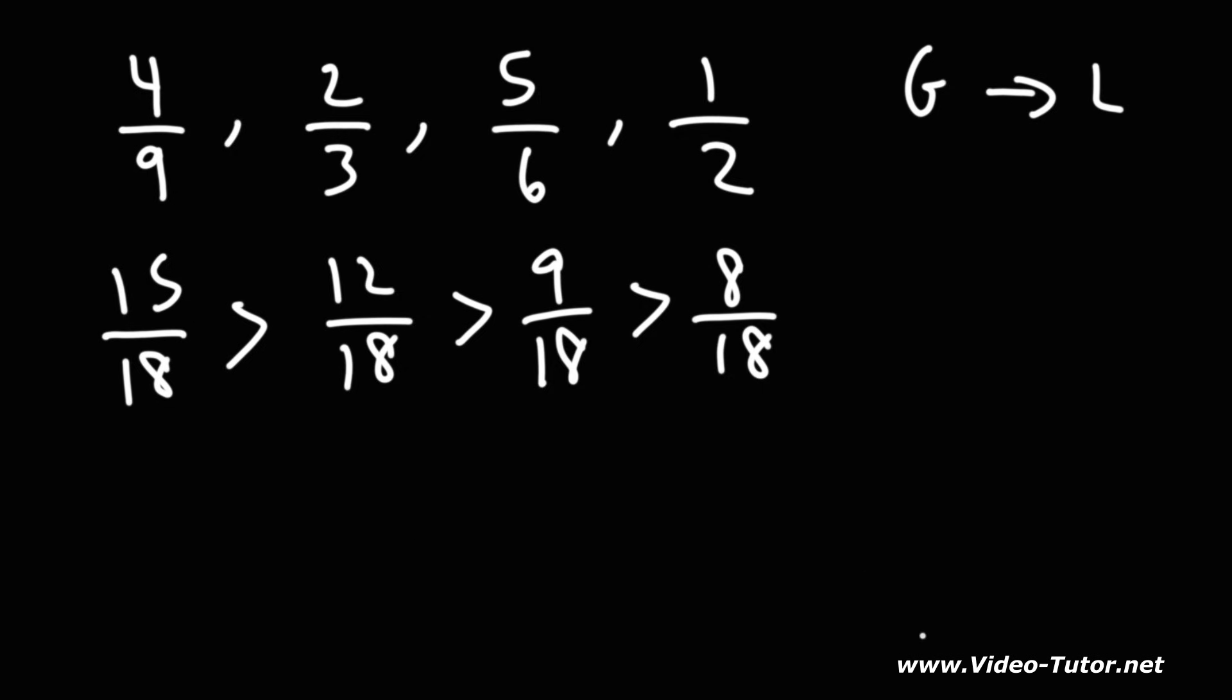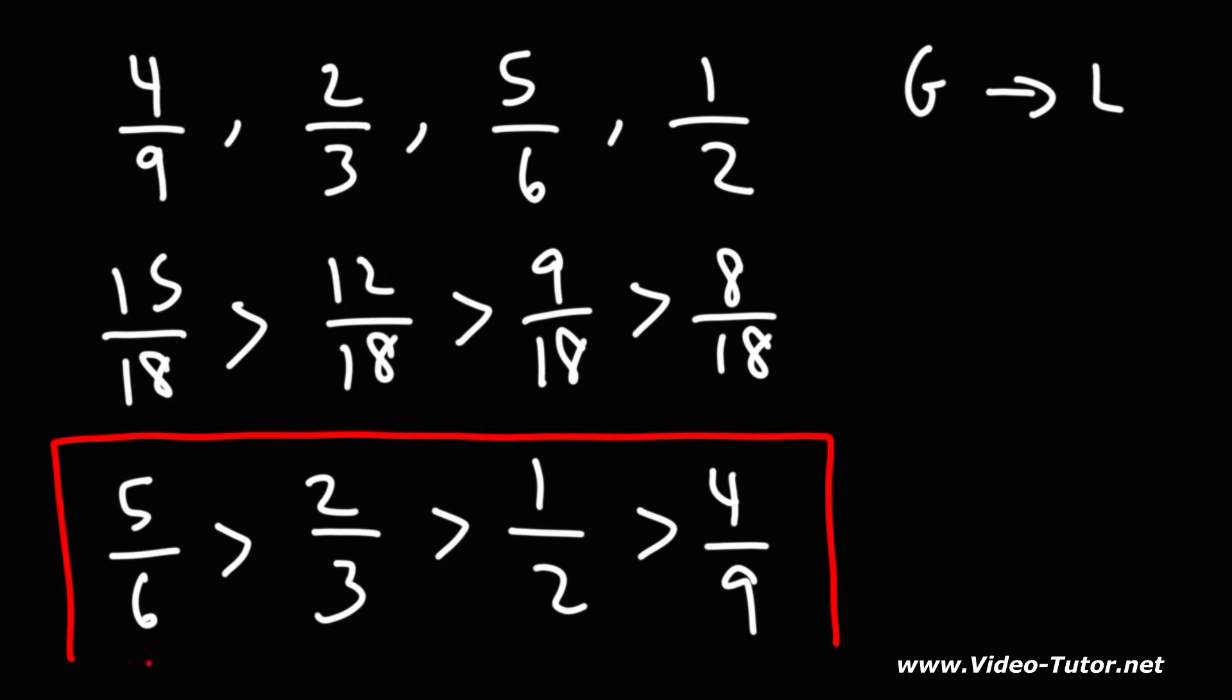Now the last thing we need to do is represent those fractions using the original values. 15 over 18, that came from 5 over 6—it reduces to 5 over 6 if you divide each of these by 3. 12 over 18, that comes from 2 over 3—if you divide both of these numbers by 6 you'll get 2 over 3. 9 over 18 is the same as one half, and 8 over 18 came from this number, 4 over 9. So this is how we can rank the fractions from greatest to least: 5 over 6 has the highest value, and then it's 2 thirds and 1 half and 4 over 9.